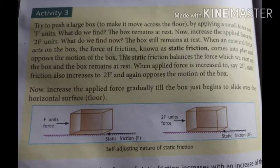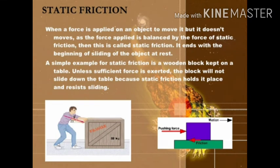Static friction has a limit. As we cross that limit, the object starts to move. Because of this, static friction is also known as self-adjusting frictional force — it adjusts its value according to the external force applied, but only up to a certain limit. Once that limit is overcome by the external force, the object comes into motion from rest.